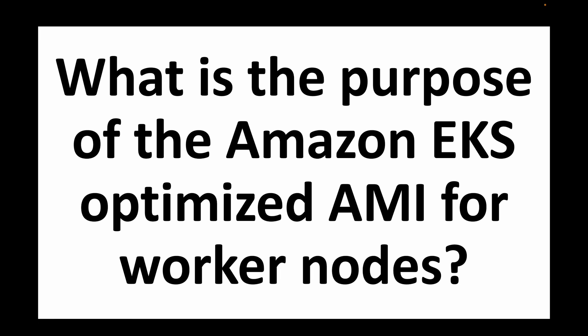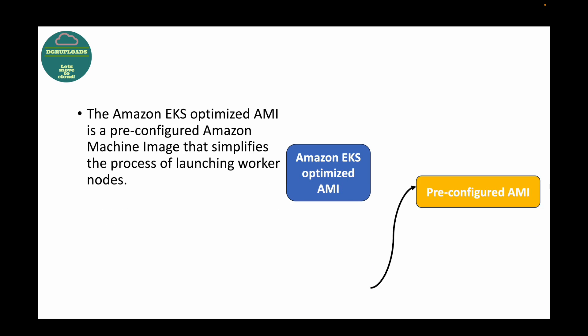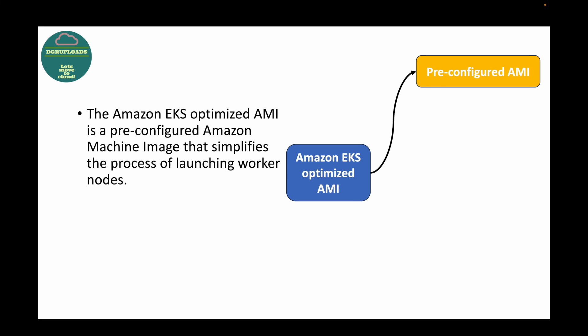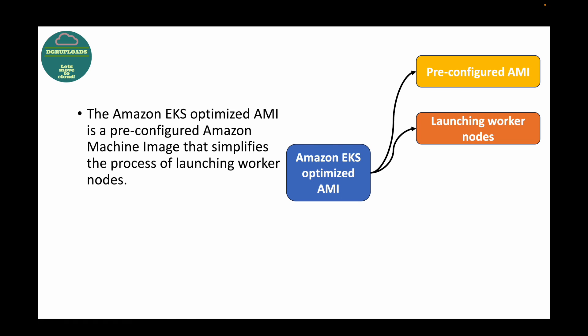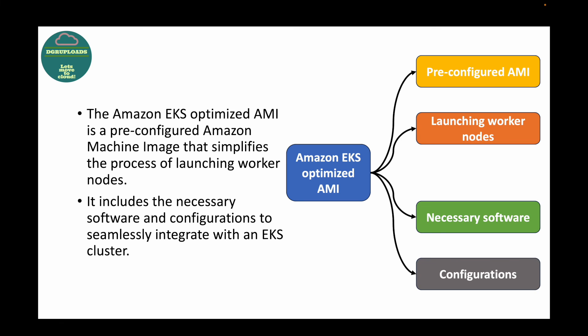The next question is: what is the purpose of the Amazon EKS optimized AMI for worker nodes? The EKS optimized AMI is a pre-configured Amazon Machine Image that simplifies the launching of worker nodes. When you need multiple worker nodes with the same configuration, you can use this pre-configured AMI so that every node launched from it has identical configuration, making launch times much faster. This AMI includes all necessary software and configurations needed to seamlessly integrate with an EKS cluster.